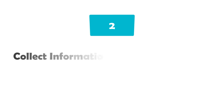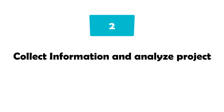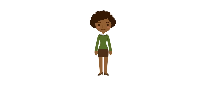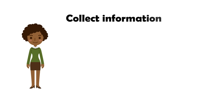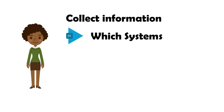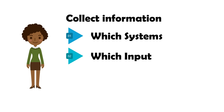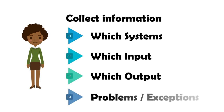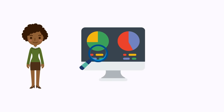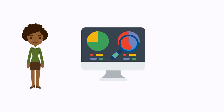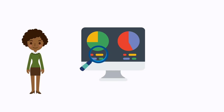The second task is to collect information and analyze the project. The business analyst has to collect information about the process: which systems the process works with, what input the process has, what output the process should bring, and what problems one can be confronted with. After that, the business analyst verifies that all actions performed by an employee are suitable for the bot.